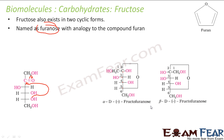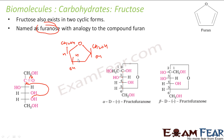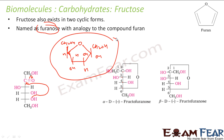We will draw the Haworth structure of fructose now. This is the Haworth structure. The structure is similar to furan, so it is also called furanose. There are again two different forms similar to glucose — alpha and beta fructose — also called fructofuranose, because the shape is similar to furan.